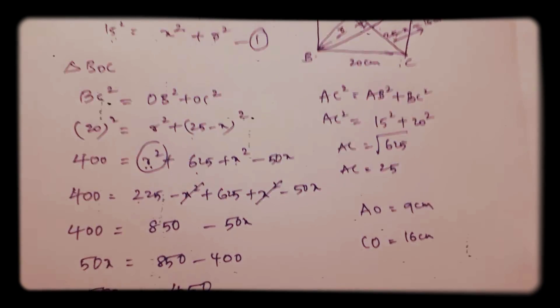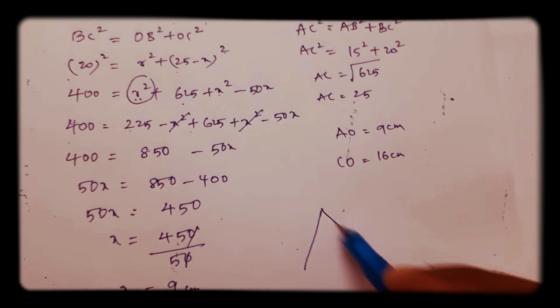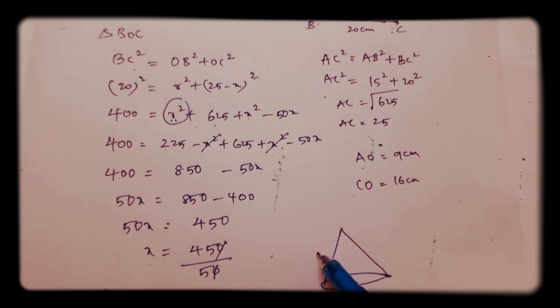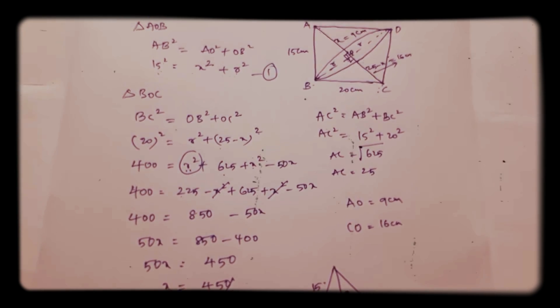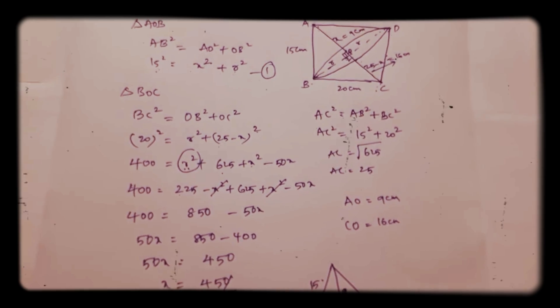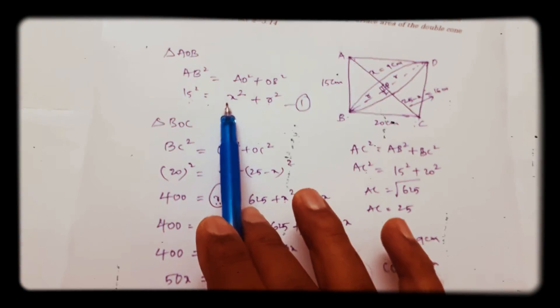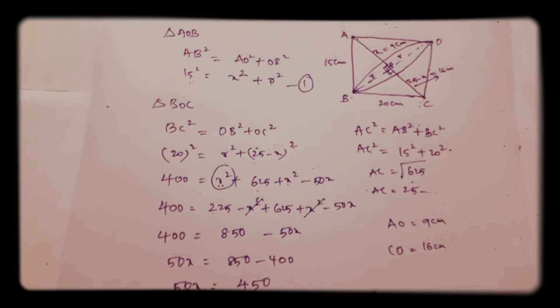Now see the top cone dimensions. If you consider the top cone, slant height is 15, height is 9, radius is 12. Now how I got this radius 12? Substitute in this equation. We got the value of X just now. X is 9.